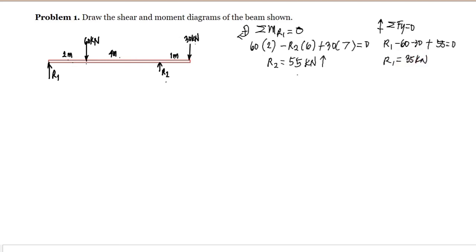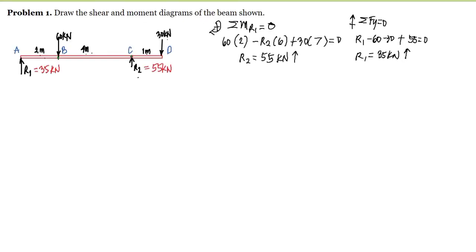Since R1 came out positive, the assumption that R1 is directed upward is correct. Now that we know the values of R1 and R2, we proceed to the computation using the area method in order to draw the shear and moment diagram.